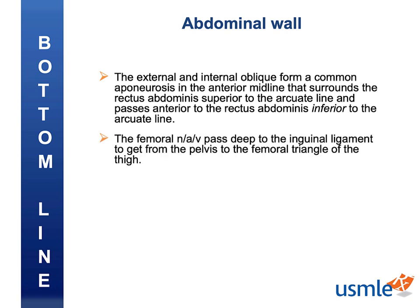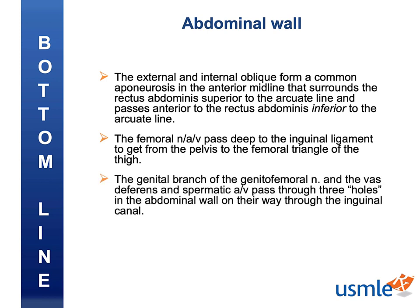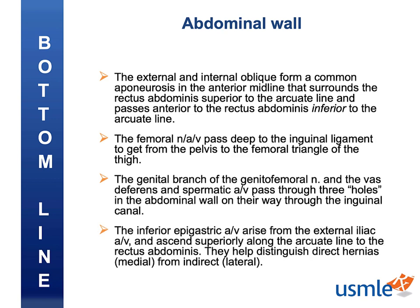The femoral nerve, artery, and vein pass deep to the inguinal ligament to get from the pelvis to the femoral triangle of the thigh. The genital branch of the genitofemoral nerve and the vas deferens and spermatic artery and vein pass through three holes in the abdominal wall on their way through the inguinal canal. Finally, the inferior epigastric artery and vein arise from the external iliac artery and vein and ascend superiorly along the arcuate line to the rectus abdominis. They help distinguish direct inguinal hernias, which arise medial, from the indirect inguinal hernias, which arise lateral to the inferior epigastrics.